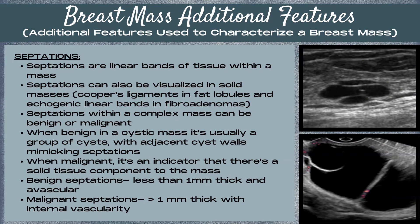You can also have septations in a mass. Septations are linear bands of tissue within a mass and can be visualized in both cystic and solid masses. With solid masses, we see this as Cooper's ligaments running through the fat lobules, or as echogenic linear bands in fibroadenomas. Septations found within a complex mass can be benign or malignant. When benign in a cystic mass, it's usually a group of cysts with adjacent cyst walls mimicking septations. When malignant in a cystic mass, it's an indicator that there's a solid tissue component to the mass.